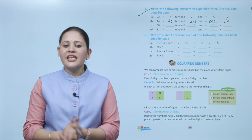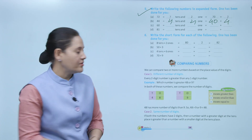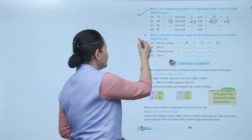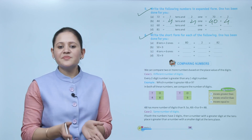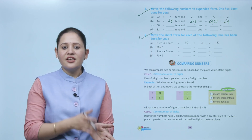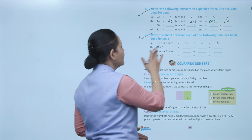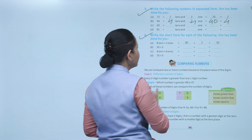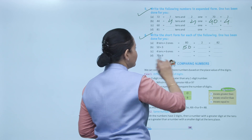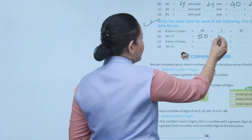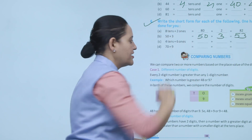Next: write the short form for each — one has been done for you. 8 tens plus 2 ones: 8 tens means 80, 2 ones means 2, so the number is 82. For 50 plus 3: that is 5 tens plus 3 ones, which is 50 plus 3, so the number is 53.